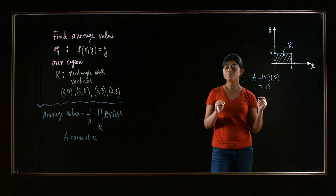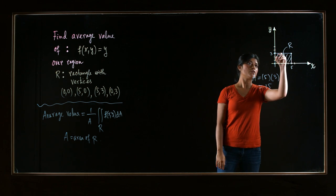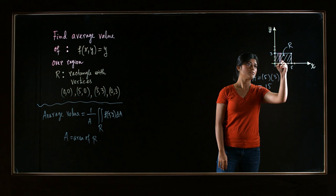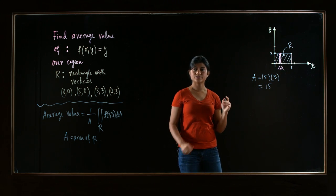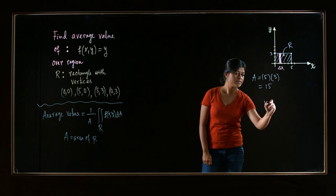Okay, so to compute the bounds, remember, we have to draw a rectangle inside the region. Let's draw a rectangle. I'm drawing a vertical rectangle. So the width of the rectangle is delta x, so x will be my outer variable.